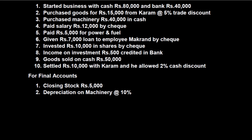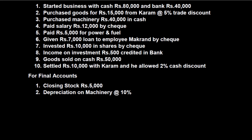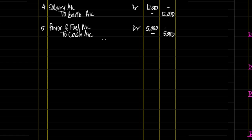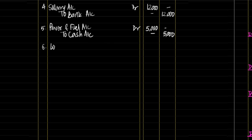Next, paid salary Rs. 12,000 by cheque. Salary is an expense, so salary account debit to bank account Rs. 12,000. Fifth transaction: paid Rs. 5,000 for power and fuel — nothing is written by cheque or cash, so obviously it is by cash. Journal entry: power and fuel account debit to cash account Rs. 5,000 — debit all expenses and losses, credit what goes out. Sixth: given Rs. 7,000 loan to employee Makran by cheque. Journal entry: loan to Makran account debit, to bank account credit Rs. 7,000.